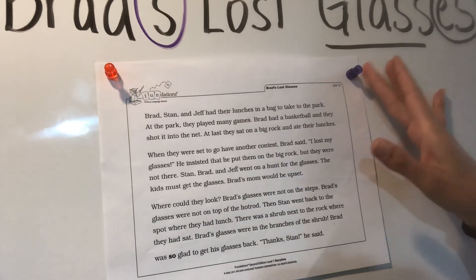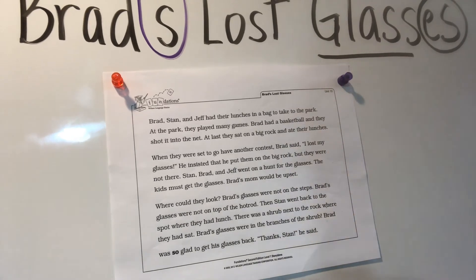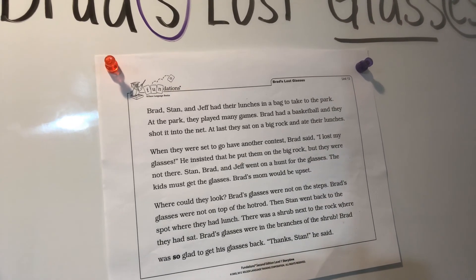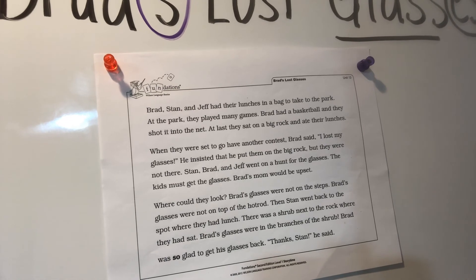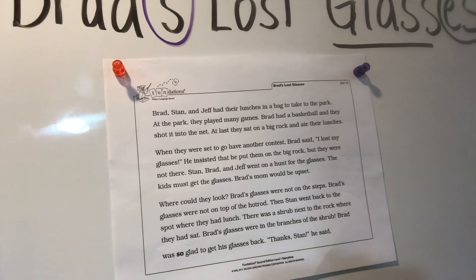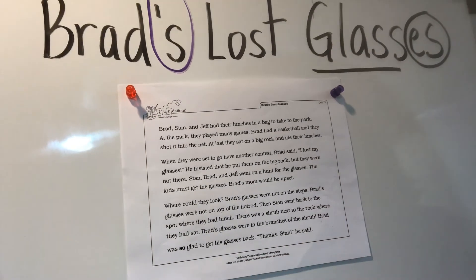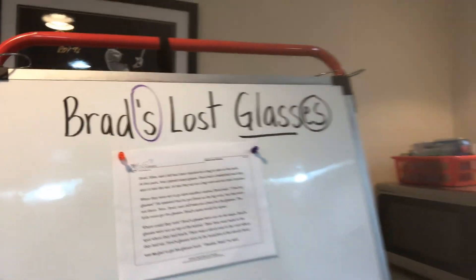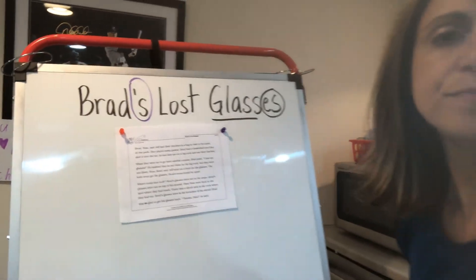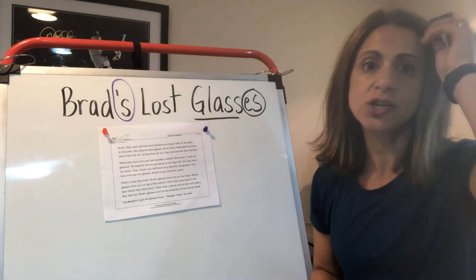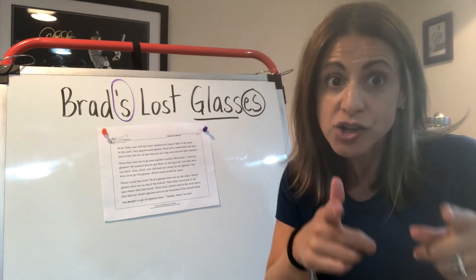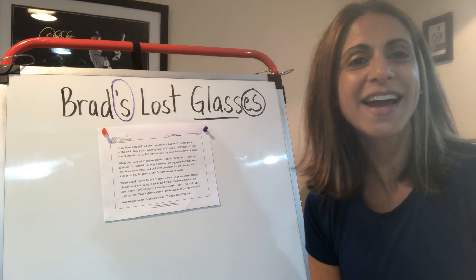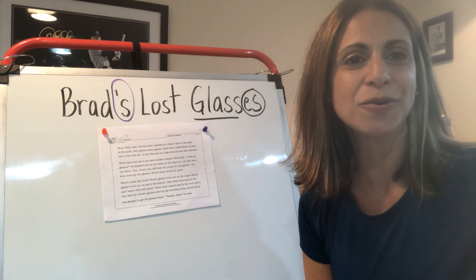You're going to go find that paper, reread the story, and then illustrate it on the back. Be sure to include the characters — Brad, Stan, Jeff — and make sure they're at the park. Maybe you could put a basketball in the picture. Whatever you want, whatever you visualized when you were reading the story. Okay guys, happy Friday, have fun. I'll see you soon.